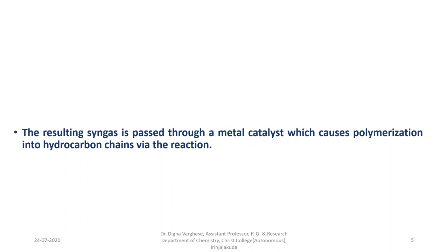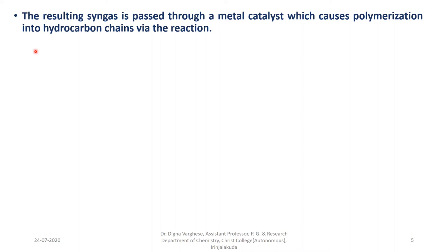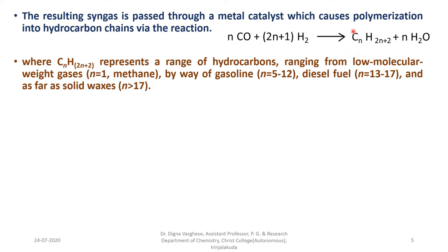The resulting syngas is passed through a metal catalyst which causes polymerization into hydrocarbon chains. The general formula CₙH₂ₙ₊₂ represents a range of hydrocarbons: from low molecular weight gases (N=1, methane), through gasoline (N=5 to 12), diesel fuel (N=13 to 17), and solid waxes (N greater than 17).